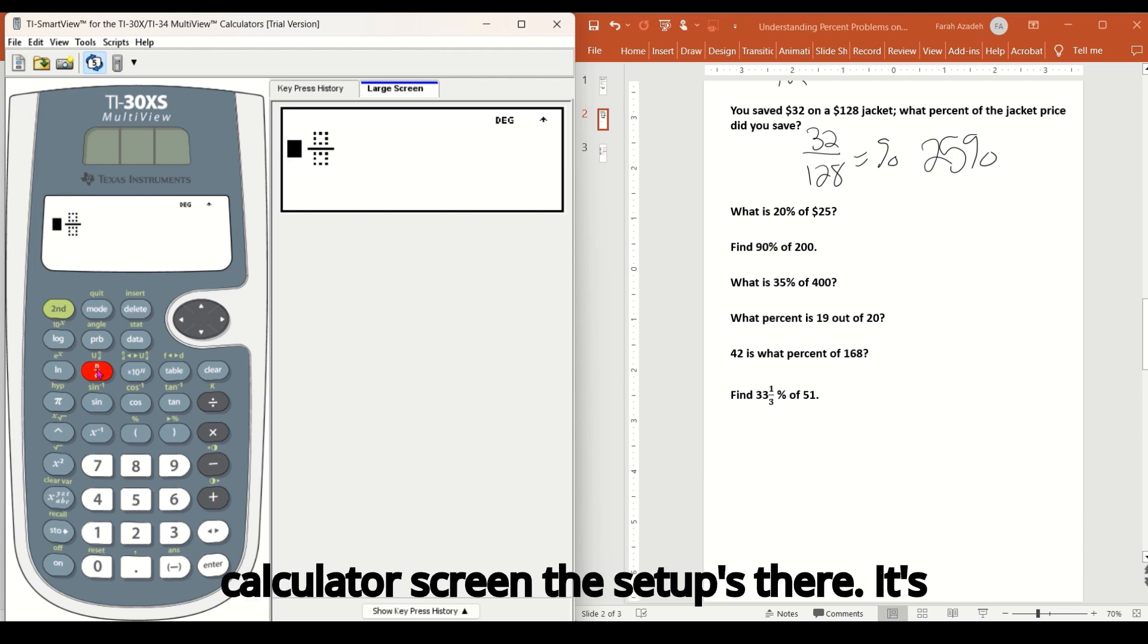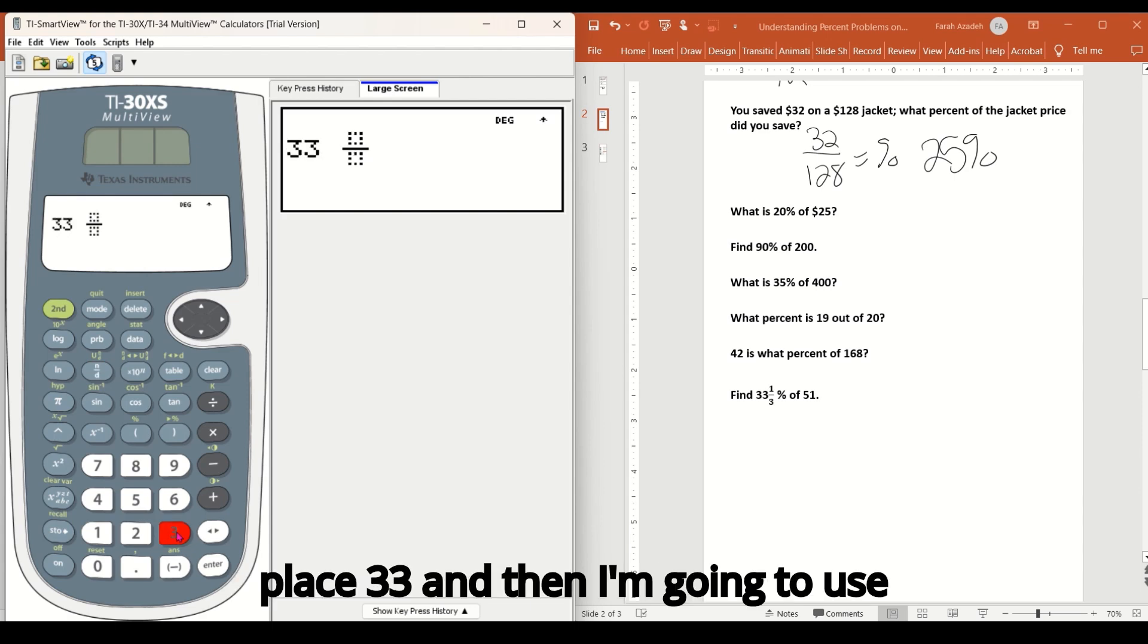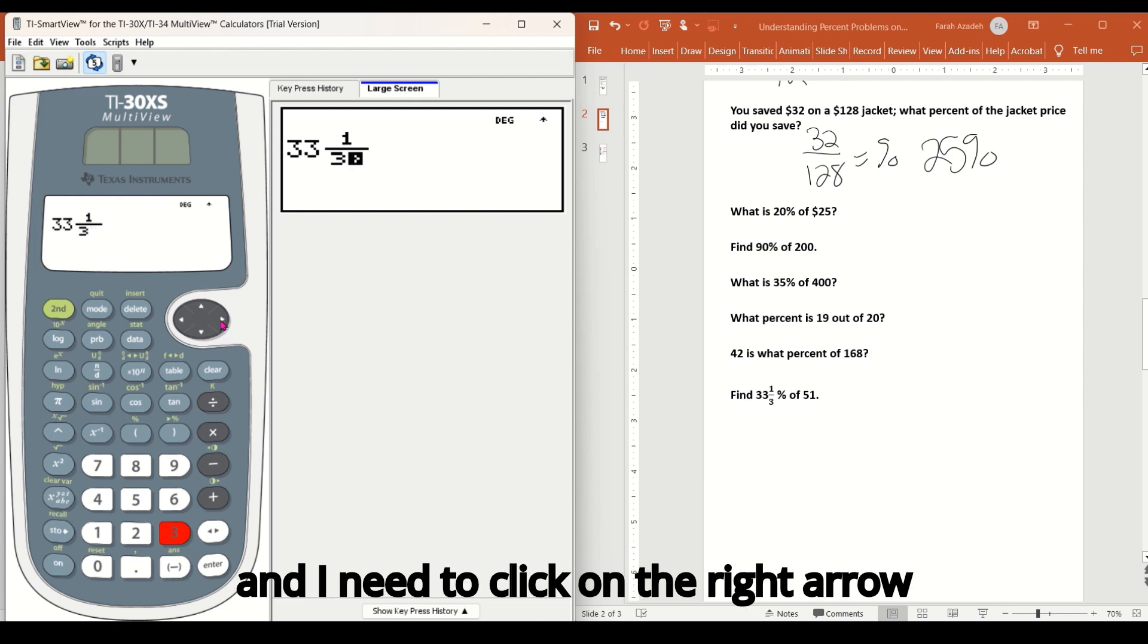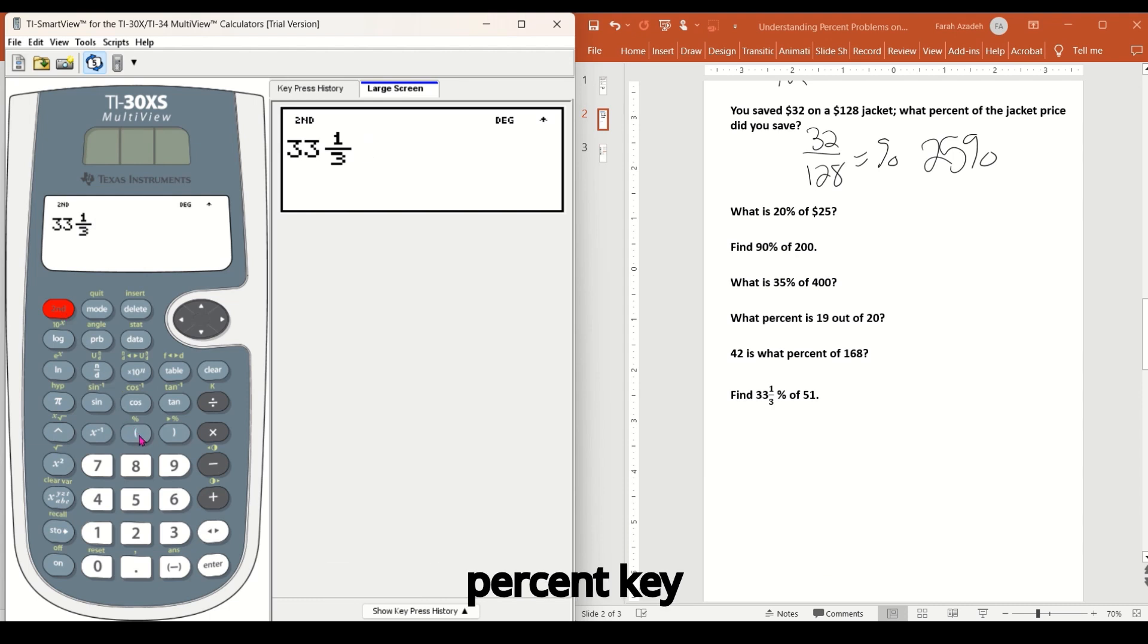And you'll notice on the calculator screen, the setup's there, it's ready for me to enter. So I'm going to place 33 and then I'm going to use the right arrow to move on over. So I can then enter one for the numerator down arrow to then enter three for the denominator. And I need to click on the right arrow to say calculator, I'm done entering 33 and one third. Then I'm going to do second, the percent key times 51 and hit enter. And the answer is 17.